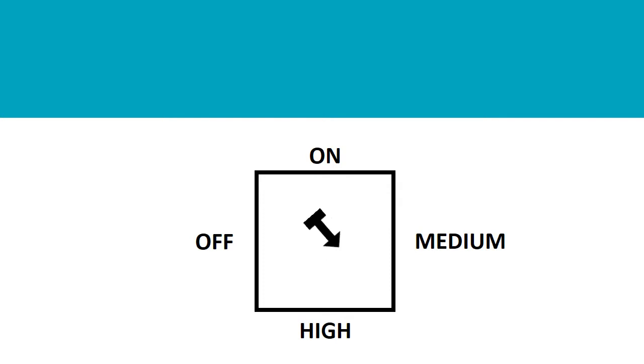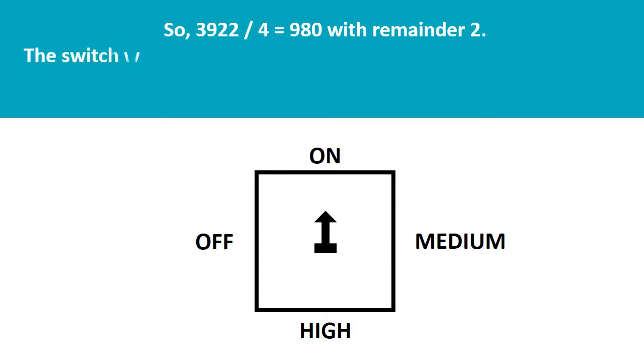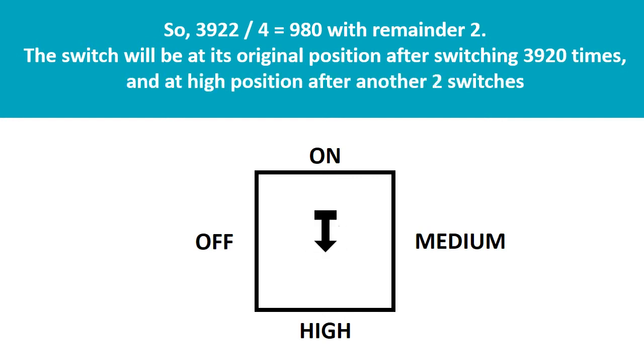The switch will be in the high position. After switching four times, the switch will return to its original position. So, 3922 divided by 4 equals 980 with remainder 2. The switch will be on its original position after switching 3920 times and at high position after another two switches.